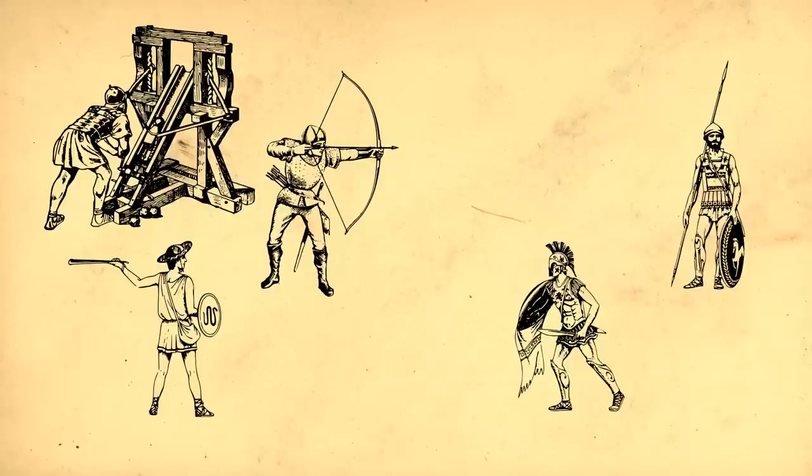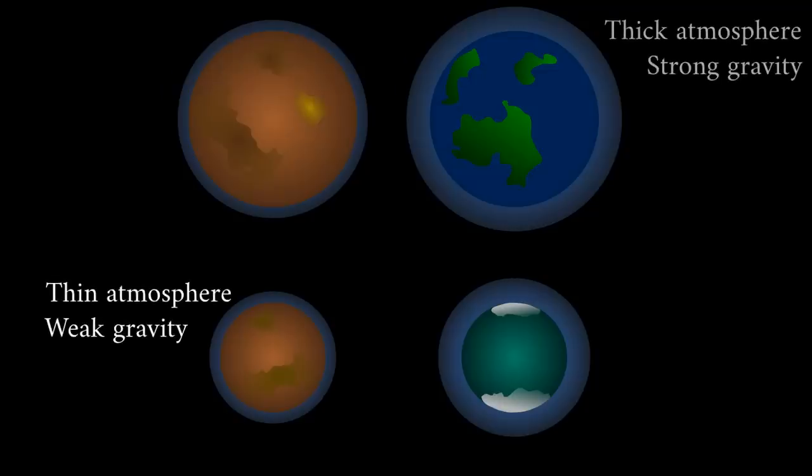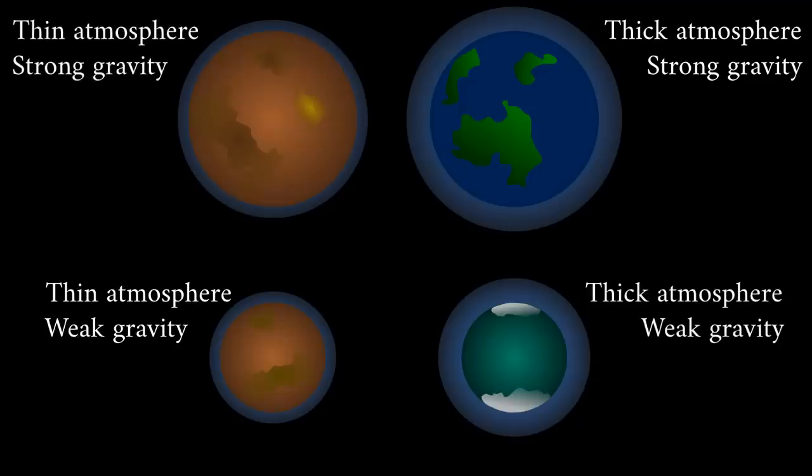Unlike with Mars, whose atmosphere is too tenuous for us to breathe even if it contained oxygen, a smaller world need not have a lower surface air density and vice versa. There could be a world with lower gravity than Earth but also more atmosphere, for example.